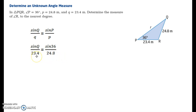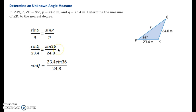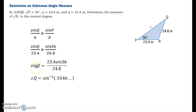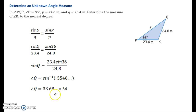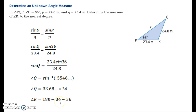Substituting the values we know: side Q is 23.4 meters, sine of P is sine 36, and side P is 24.8. Moving 23.4 over, we multiply both sides by that. Because we're trying to find an angle, we have to take the inverse of this value. This value is equal to 0.5546, and we take the inverse to find the angle measure, which is equal to approximately 33.6 degrees, or roughly 34 degrees. That's not the angle we're trying to find — the angle we're actually looking for is angle R. So the last step is to take 180 minus 34 minus 36, subtracting angle Q and the given angle P.